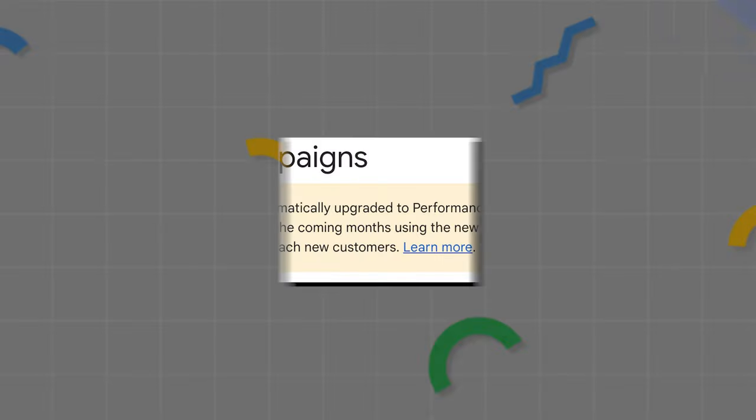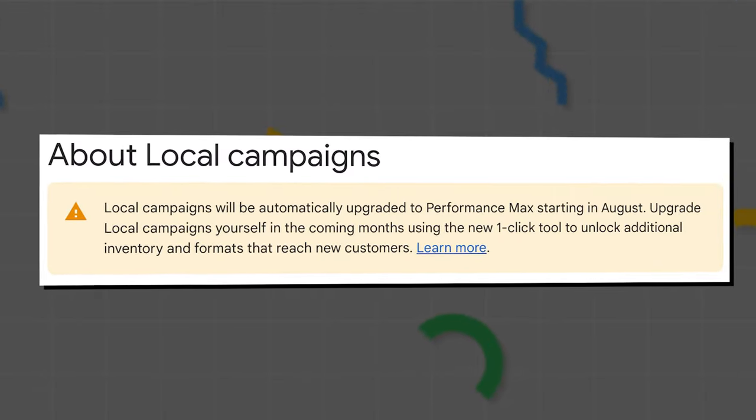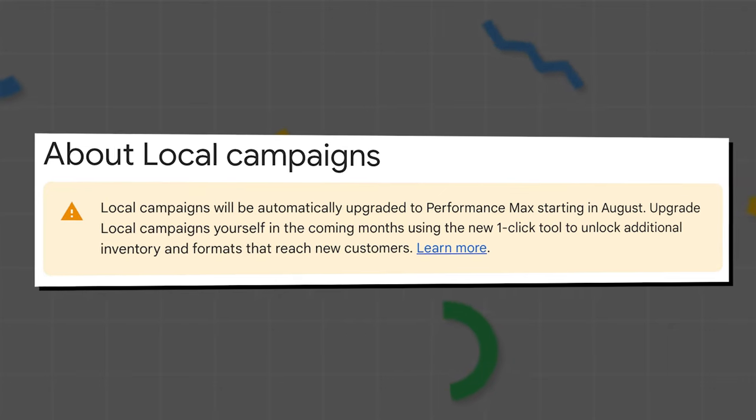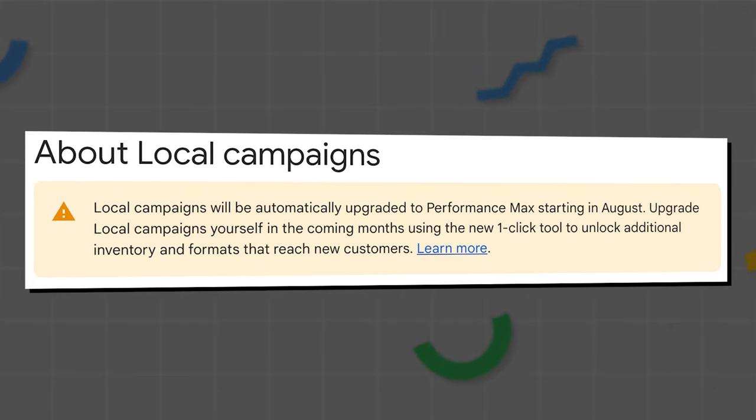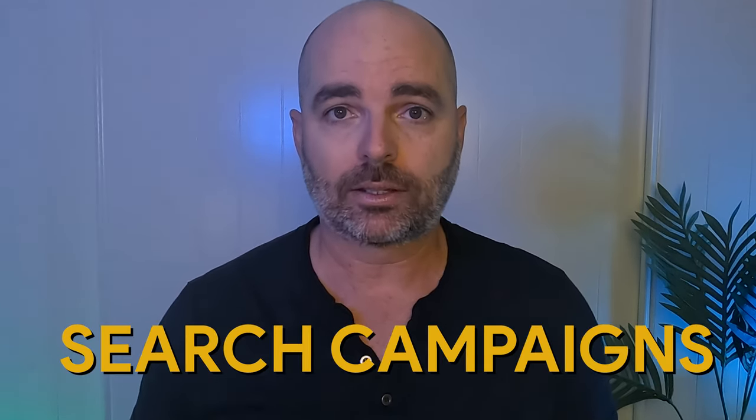August 2022 is the month that if you have any local campaigns in your Google Ads account, they will be automatically upgraded to Performance Max campaigns. But right now, my very strong recommendation is that if you've got a local business that you want to advertise through Google Ads, you should be focusing on one type of campaign and one campaign only, and that is search campaigns.